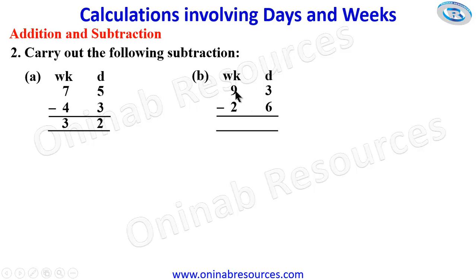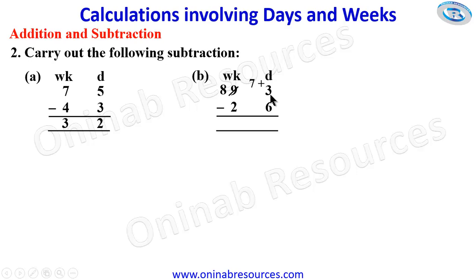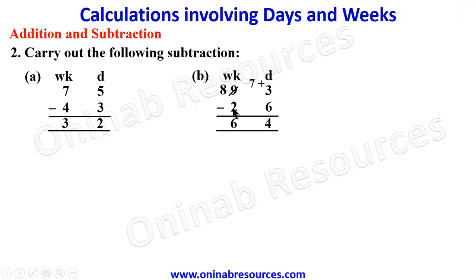We go for B. For B, we have 9 weeks 3 days minus 2 weeks 6 days. Starting from the day column, we cannot say 3 minus 6 days, so we have to borrow 1 from 9, leaving 8 there. The 1 we borrow — that is 1 week — is 7 days, to be added to this 3. So 7 plus 3 gives 10 days. 10 days minus 6 days gives 4 days. Since we are left with 8 weeks, 8 weeks minus 2 weeks gives 6 weeks. So 9 weeks 3 days minus 2 weeks 6 days gives 6 weeks 4 days.